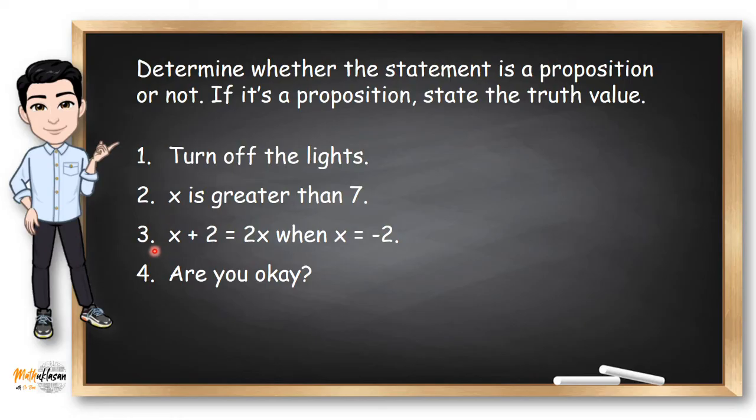Number three, X plus two equals 2X when X equals negative two. This is a proposition. Why? Because X has a particular value, which is negative two.